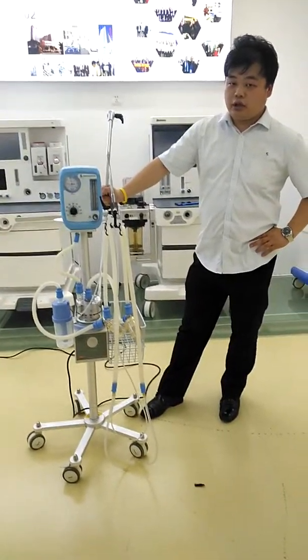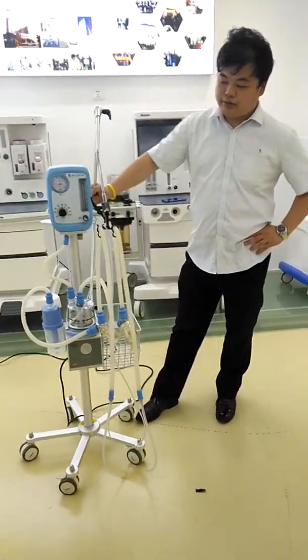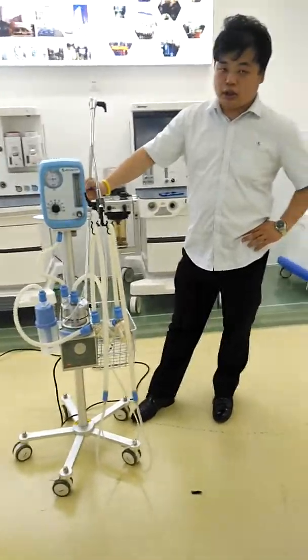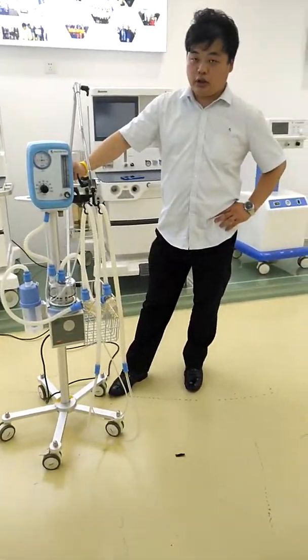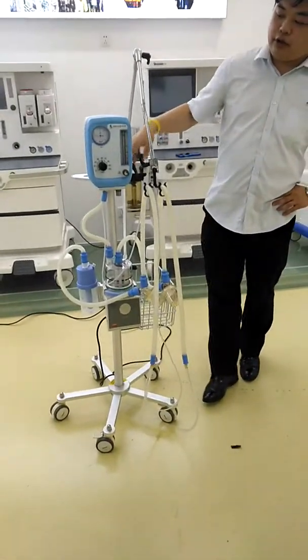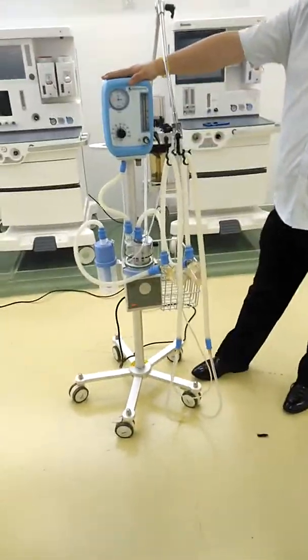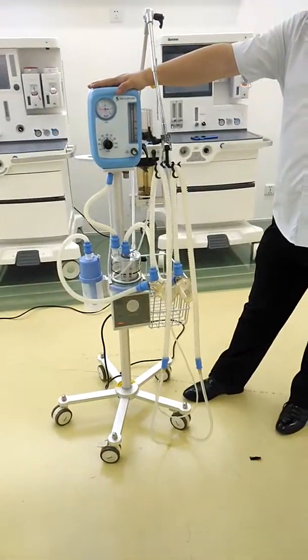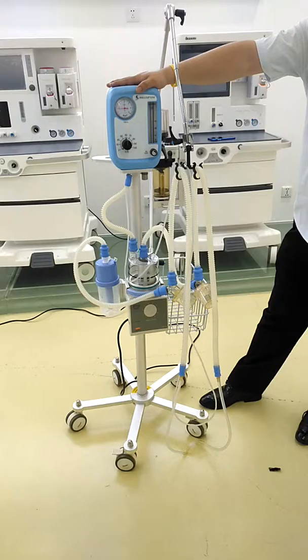This is our NAF 200B CPAP system, also called the continuous positive airway pressure system. This machine is mainly used for babies who are premature and have weak lung function.